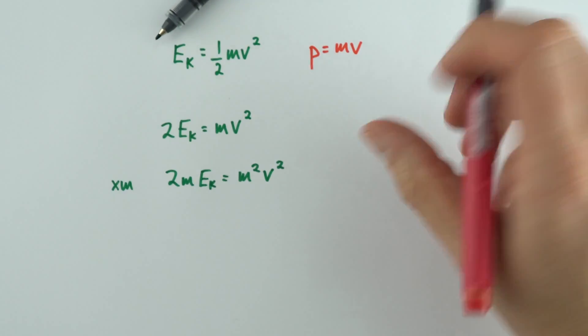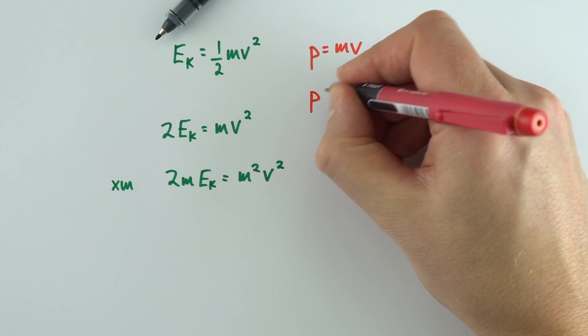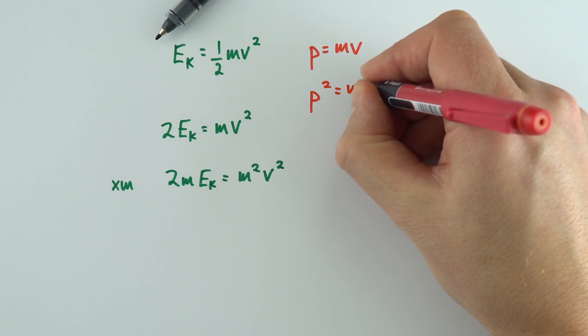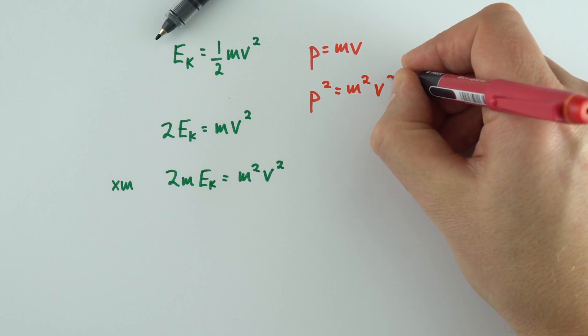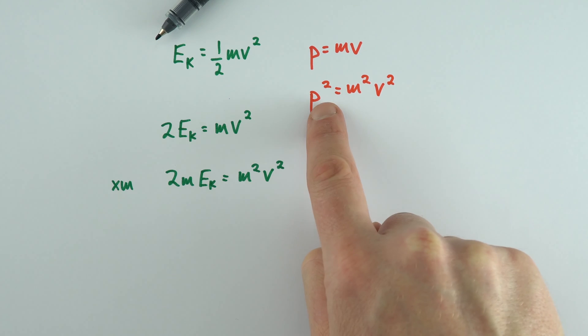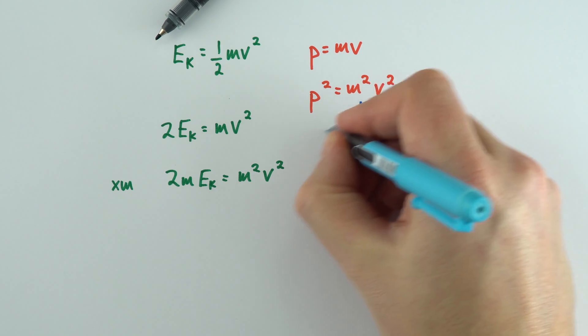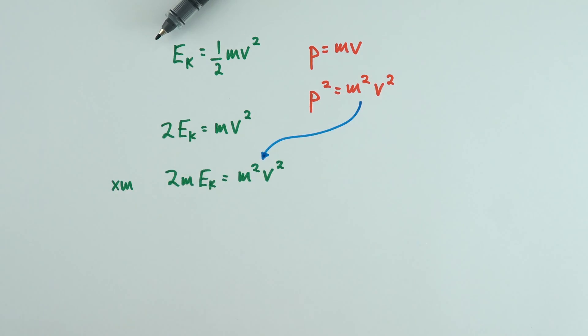Now the other thing I'm going to do is, just like we did last time, square both sides. We can say that p² = m²v², and we can now replace this m²v² with just p². So I'm just going to be putting this into that part of the equation.